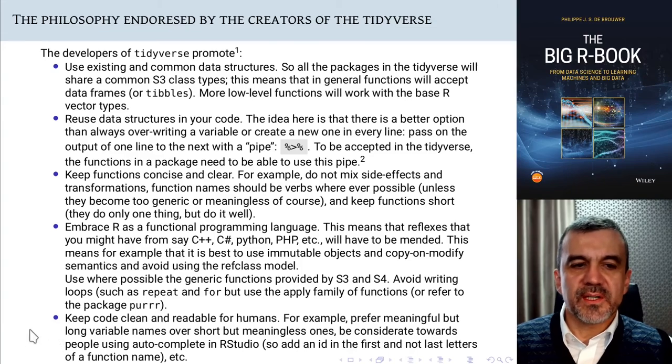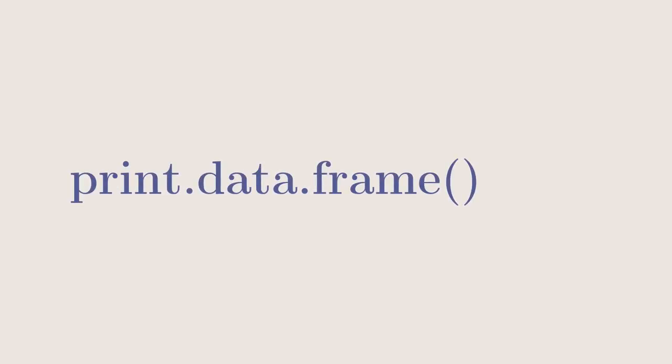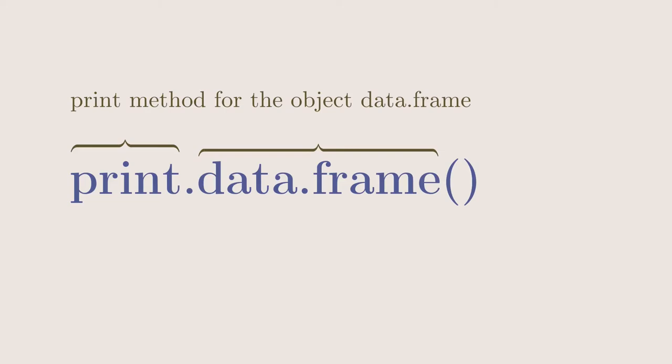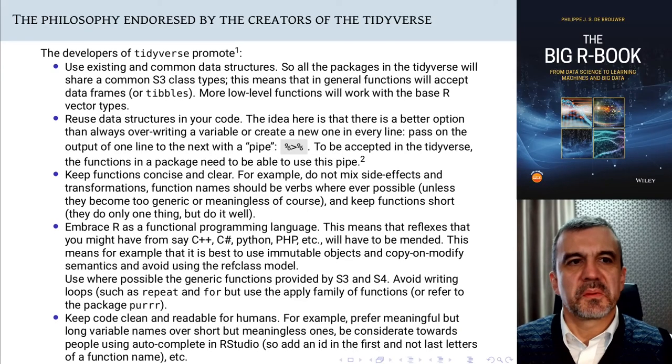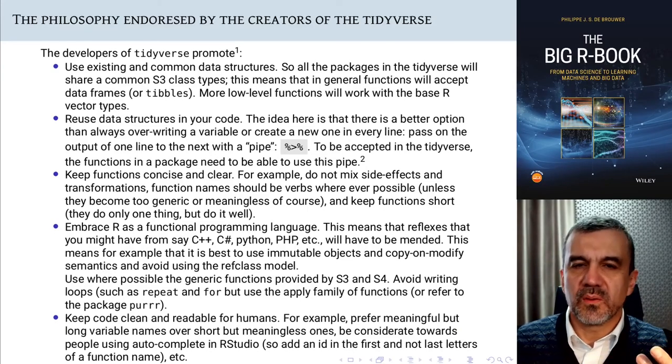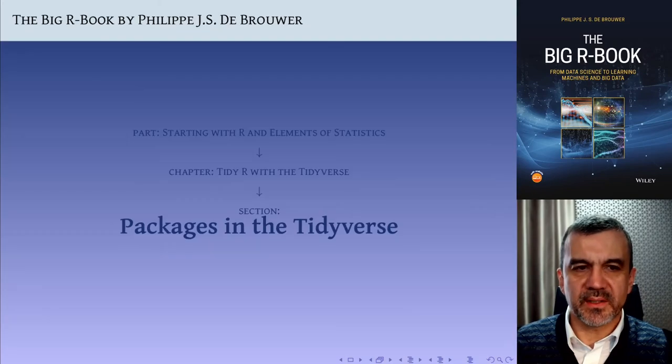Another thing is that code must be easy to maintain, must be easy to read for humans. So, things that could be confusing, like using a dot within a function name, can be confusing because we also use the dot to separate the object from the function name. Those types of things better avoid them. So if you're writing functions, use the underscore to separate words. That is probably the core ideas behind the tidyverse.